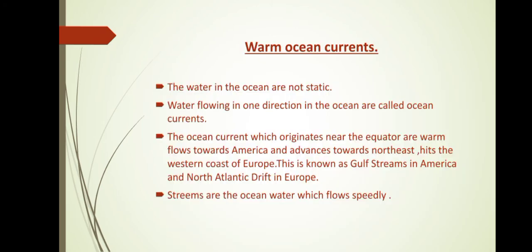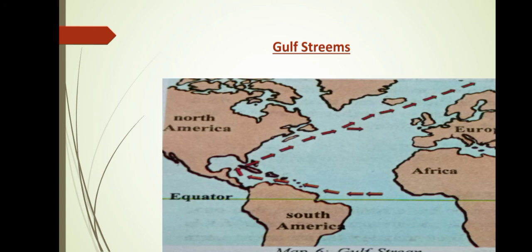The water in the ocean is not static — it moves, and those are called warm ocean currents. Ocean currents are ocean water which moves in one direction. The ocean currents originate near the equator as warm ocean currents, flow towards America and advance towards the northeast, hitting the western coast of Europe. This is known as the Gulf Stream in America and the North Atlantic Drift in Europe. You can identify a stream on the map moving towards the west and then again to the northwestern part of Europe.